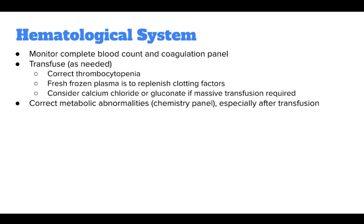For the hematological system, monitor complete blood count and coagulation panel. Transfuse as needed and correct thrombocytopenia. Use fresh frozen plasma to replenish clotting factors. Consider calcium chloride or gluconate if massive transfusion is required, and correct metabolic abnormalities with a chemistry panel, especially after a transfusion.